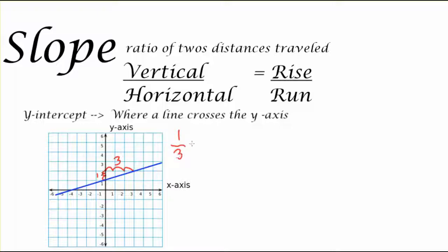So what is my rise? I went up one unit and I went over three units. So my slope is 1 over 3, which we know as a fraction one-third. One-third is my slope.